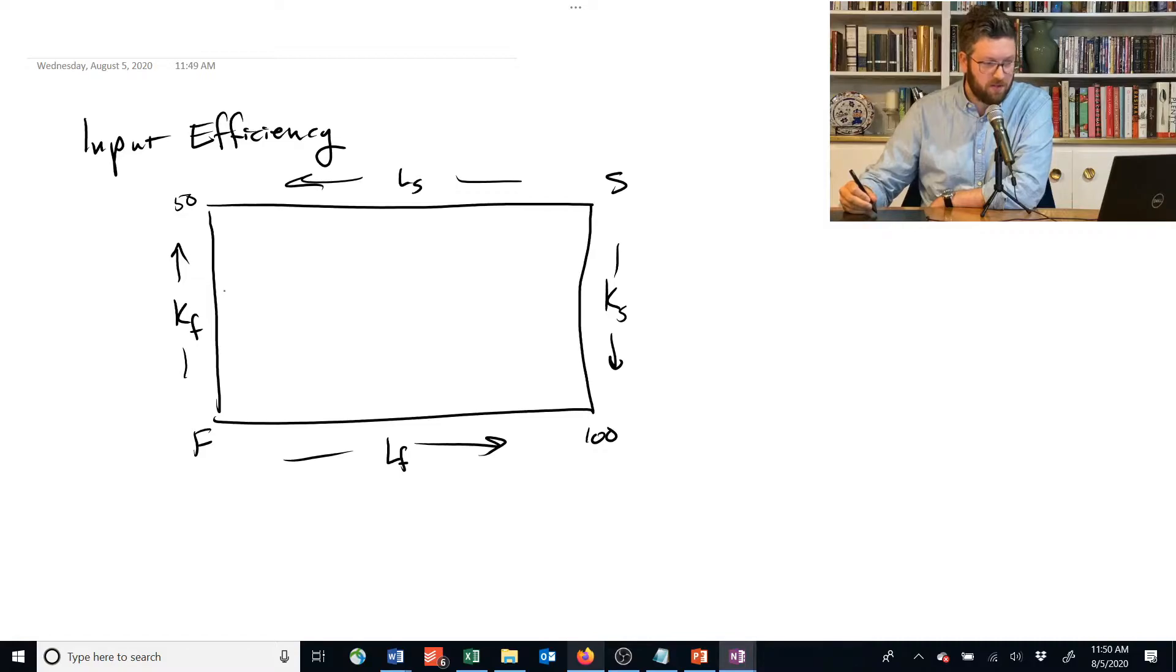And we had isoquants. So if they look like this, for example, this would be the isoquant associated with some quantity of food. This upside down one, when measured from the shelter corner, was maybe the isoquant associated with a certain amount of shelter. It doesn't have to be the same, let's say 300.